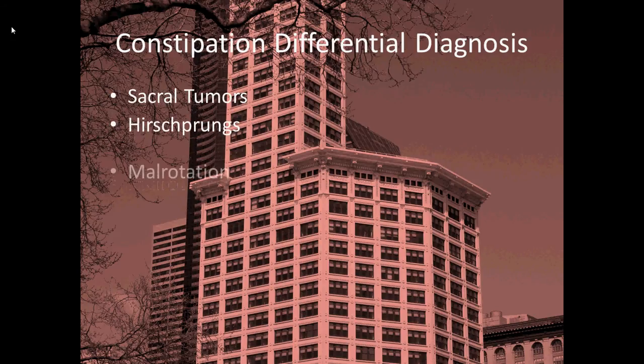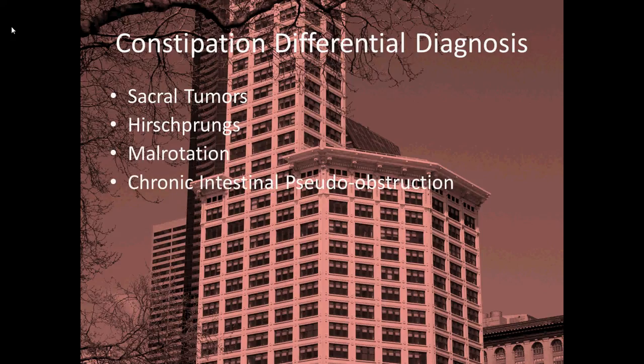Sacral tumors can cause it, Hirschsprung's disease, malrotation, chronic intestinal pseudo-obstruction — which will present with some bladder difficulties, either urinary retention or lead-pipe leaking of the bladder. Child abuse: in the realm of general pediatrics, child abuse as a cause of functional fecal retention is rare. However, if you talk to people who work in the field of child abuse, a number of their patients will be constipated. The constipation they see is rarely a result of anal penetration, but rather more a result of behavioral changes as a coping mechanism. In general pediatrics, most constipation is functional, not resulting from child abuse.